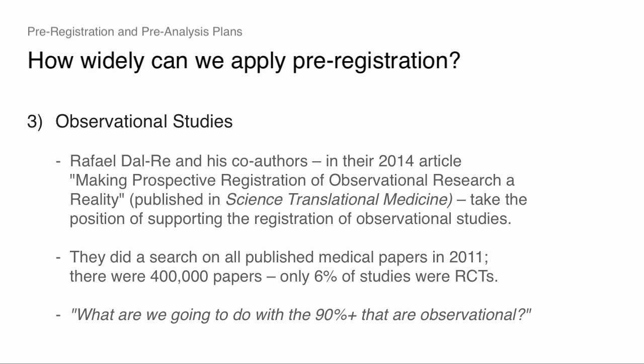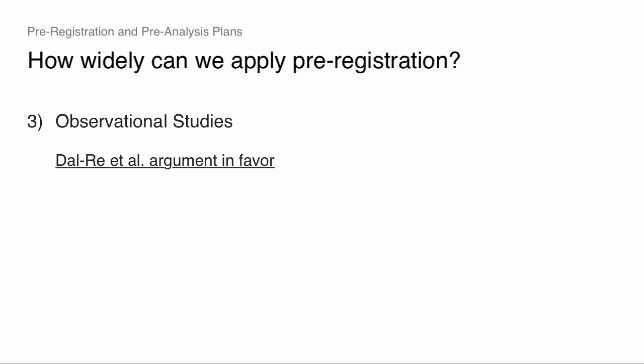Why do Dal Ray et al. make this case? They have a very strong call in favor and make some interesting arguments. First: if you're using human subjects data, you're getting IRB approval — you're already telling somebody what you're planning to do with the data. So just post it online. It's low cost. You're already telling an ethics board how you're going to use human subjects data — what's the big deal? It's not burdensome. That's their first point.